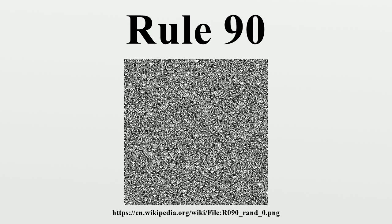Rule 90 is an elementary cellular automaton based on the exclusive or function. It consists of a one-dimensional array of cells, each of which can hold either a zero or a one value. In each time step, all values are simultaneously replaced by the exclusive or of the two neighboring values.